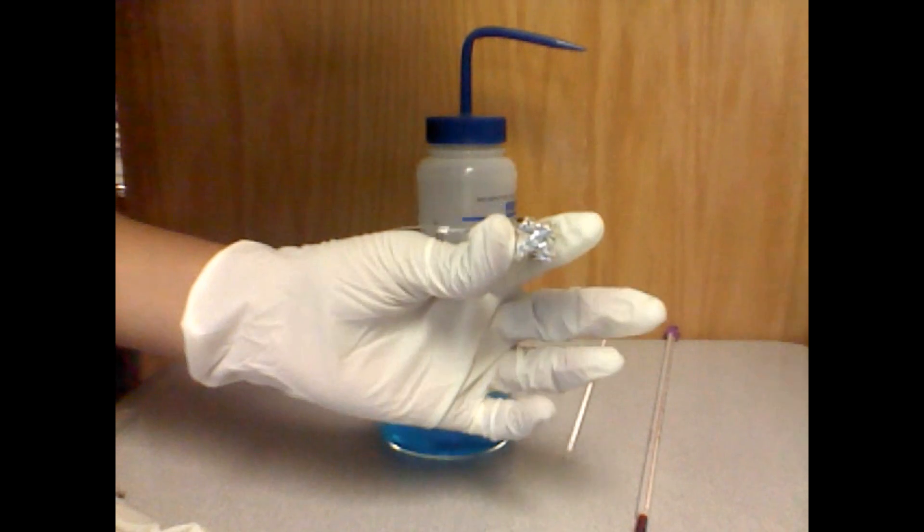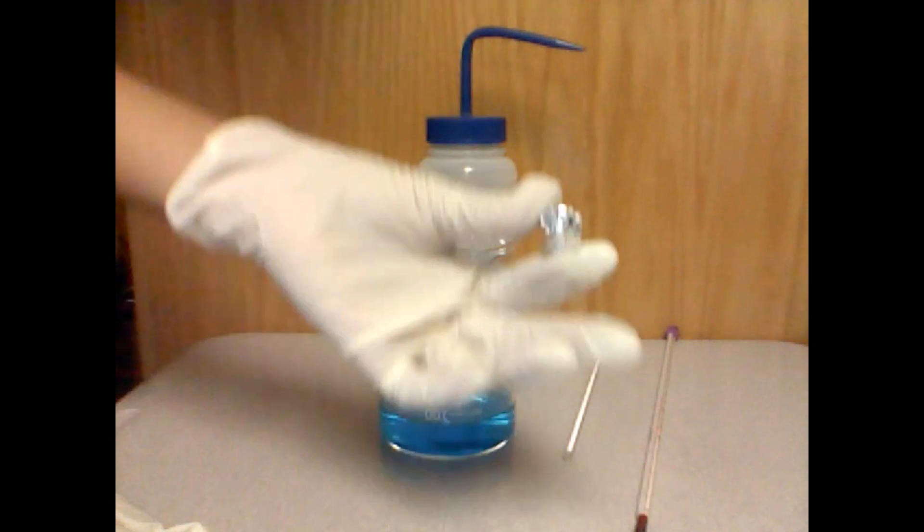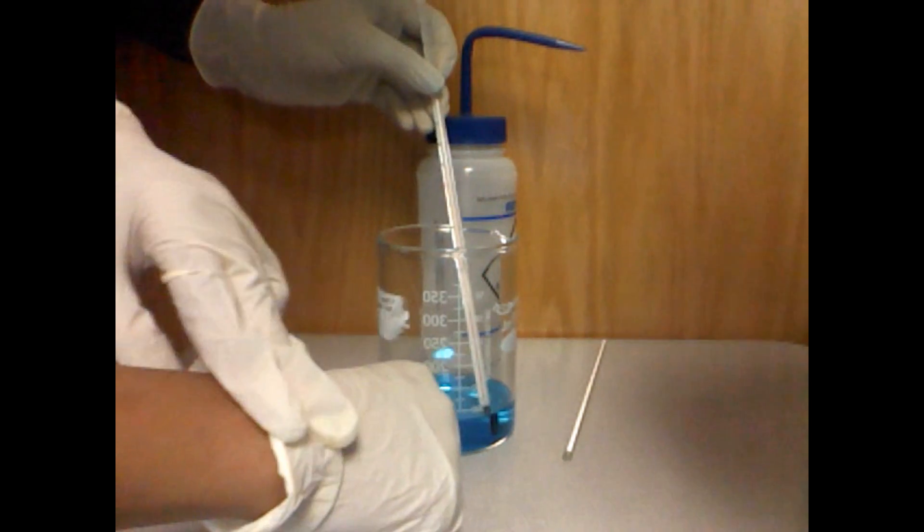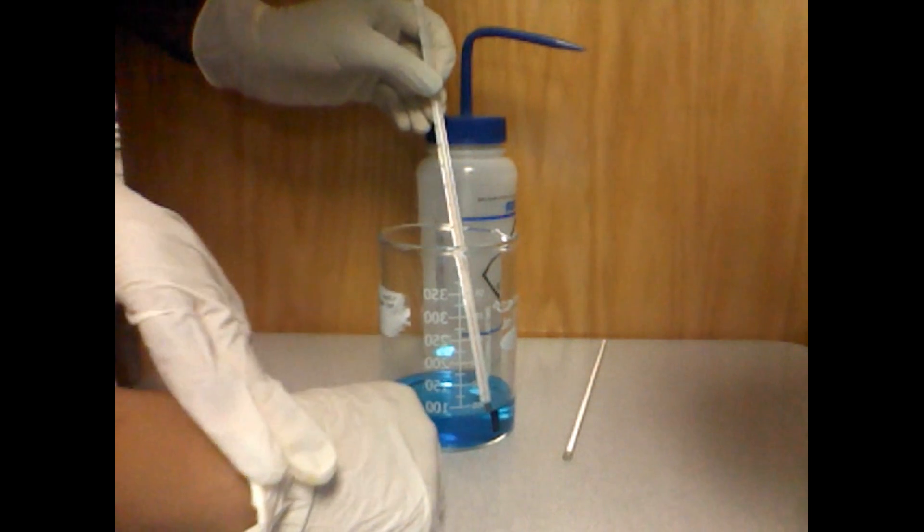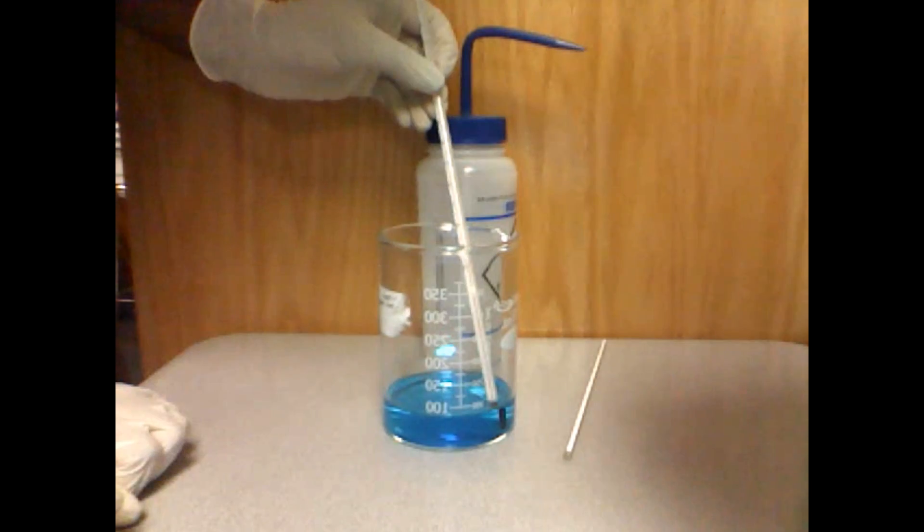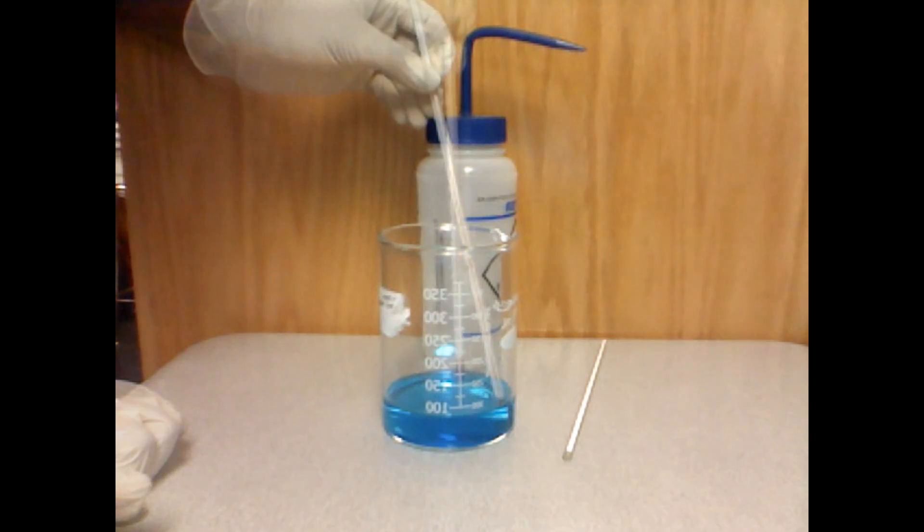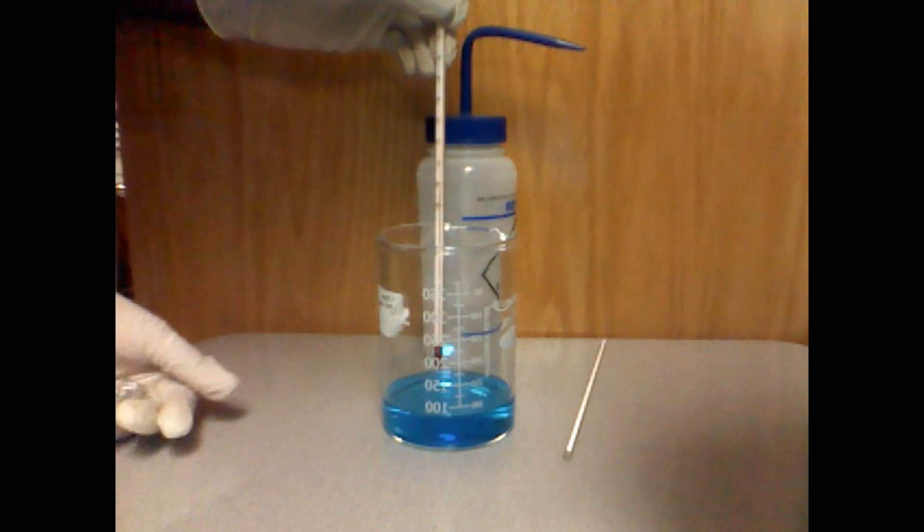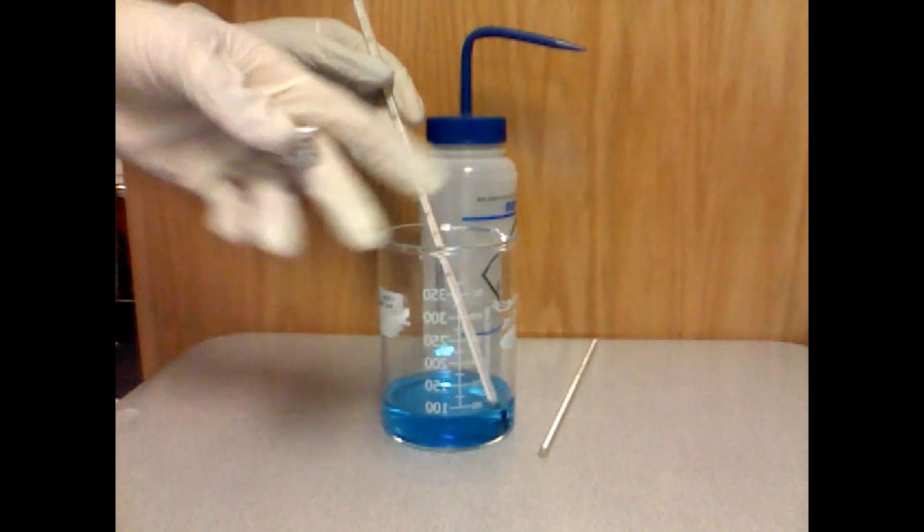We must now measure the temperature of the solution before we add the aluminum foil to it. The temperature is approximately 27 degrees Celsius.